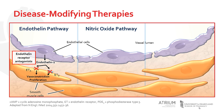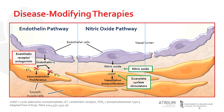In the second pathway, nitric oxide acts as one of the body's physiologic vasodilators, and it also has antiproliferative effects. It acts via increased cyclic GMP concentrations. Exogenous nitric oxide may be administered to enhance this pathway, but this is primarily reserved for acutely ill patients. The guanylate cyclase stimulator, riociguat, may also be used to increase cyclic GMP production to enhance this pathway. Finally, cyclic GMP is broken down by phosphodiesterase type 5, so PDE-5 inhibitors, such as sildenafil, can be used to prevent cyclic GMP degradation.